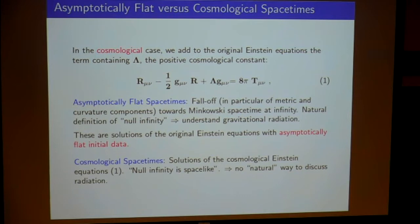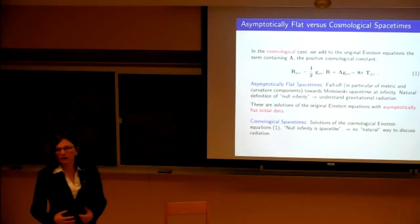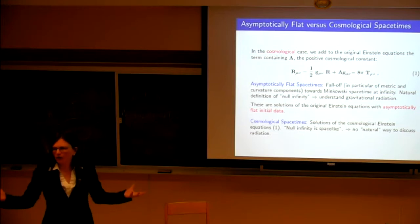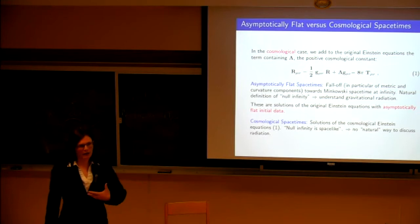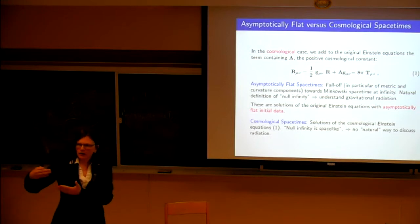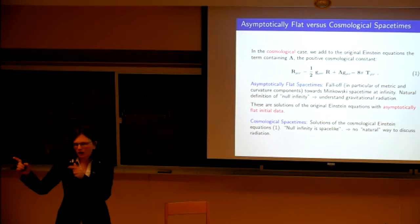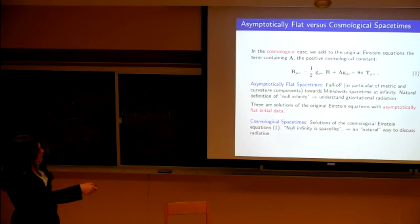In 1927, George Lemaître derived a solution for an expanding universe and matched it with Slipher's red-shift data from other galaxies, deriving what's called the Hubble relation — though Hubble never really believed in an expanding universe. So these are two completely different equations: the original Einstein equations for isolated physical systems, and the cosmological equations with lambda.